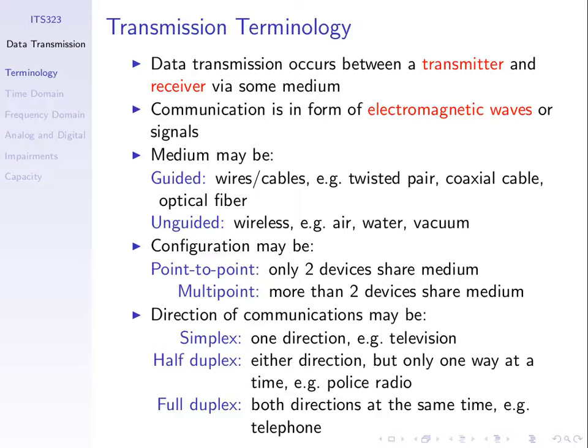When we communicate, we also look at the direction. The terminology we use is simplex, half-duplex, and full-duplex. Simplex is a communications medium where we send in one direction only. For example, broadcast TV: there's a TV station with a transmitter, they transmit a signal and your TV with the antenna receives the signal. Your TV does not send anything back to the TV station. So it's simplex communications.